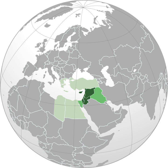The Levant is an approximate historical geographical term referring to a large area in the eastern Mediterranean, primarily in Western Asia. In its narrowest sense, it is equivalent to the historical region of Syria. In its widest historical sense, the Levant included all of the eastern Mediterranean with its islands — that is, all of the countries along the eastern Mediterranean shores, extending from Greece to Cyrenaica.